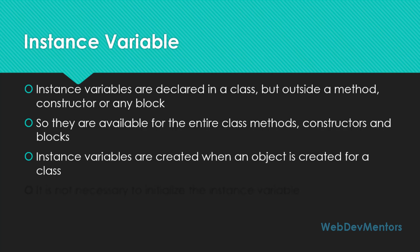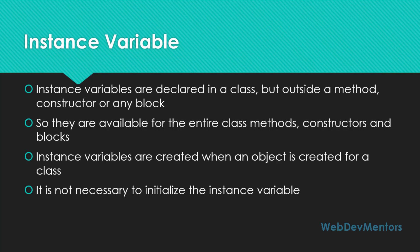Instance variables are created when an object is created for a class. When you create or declare an object, the instance variables will be created. It is not necessary to initialize the instance variables — you can just specify the data type and the name of the variable, and that's more than enough. You can initialize them within the method or the block of code in which you're going to use them.